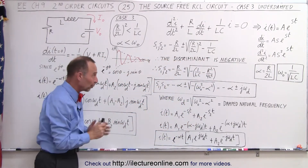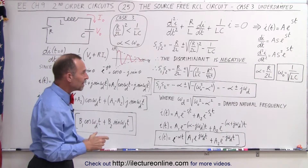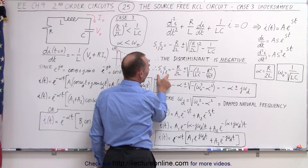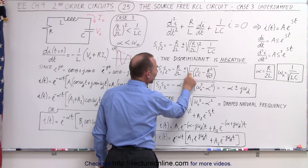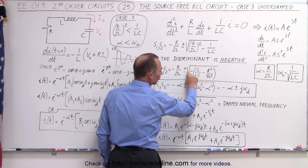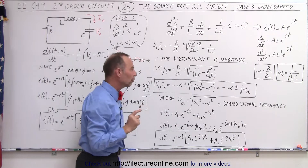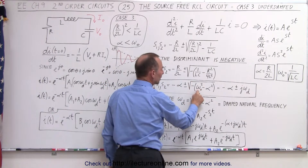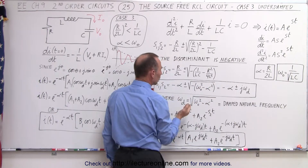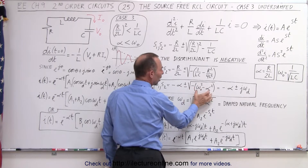In other words, the quantity underneath the radical is negative. What that means is we can rewrite the solution to the characteristic equation as being the square root of the negative of this quantity. This will always be positive, so we're forcing what's underneath the radical to be negative. We're going to replace this by the natural frequency squared and this by the damping factor squared.